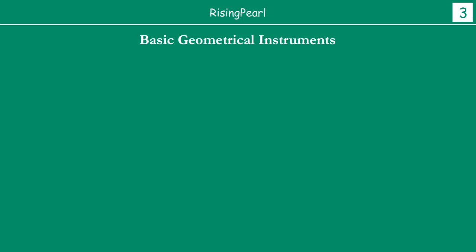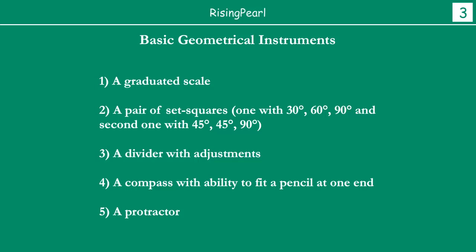So ek kaam karte hain. Ab hame maalum hai ki kyun humein geometrical construction hamare liye important hai. Now, before we jump into how we do constructions, aayye baat karte hain about important instruments that we absolutely need to have. So yeh hai, Dostho — five very important geometrical construction tool kit items aap kahiye, jo aap ko definitely inke baare mein maalum honi chahiye. So, pahli cheez, Dostho, a graduated scale.